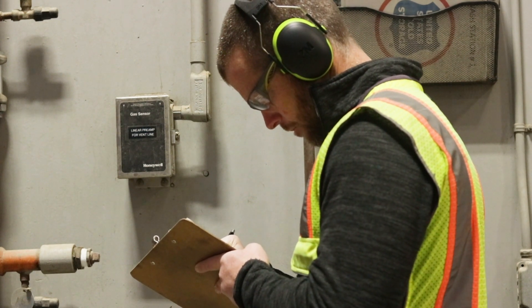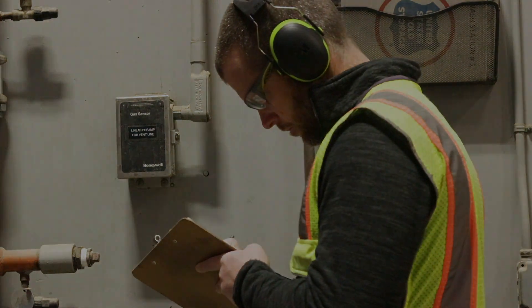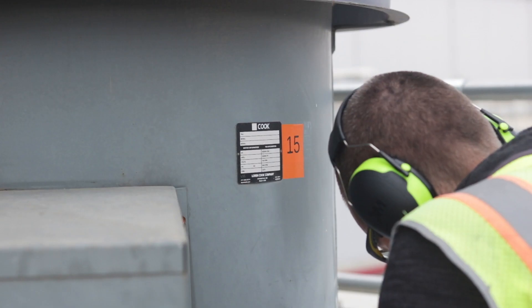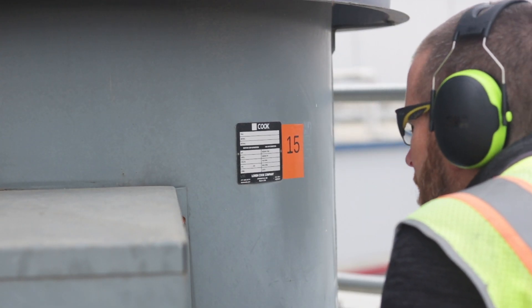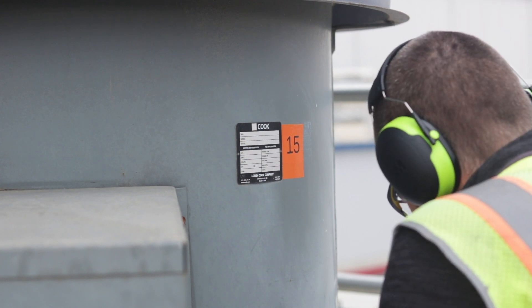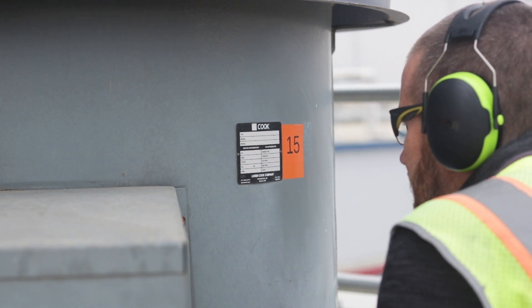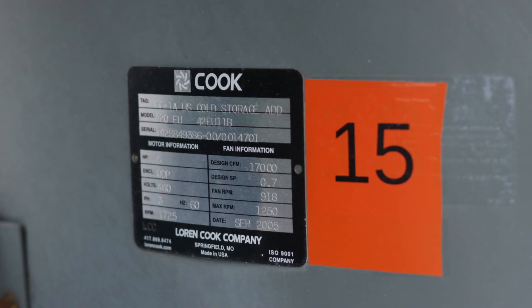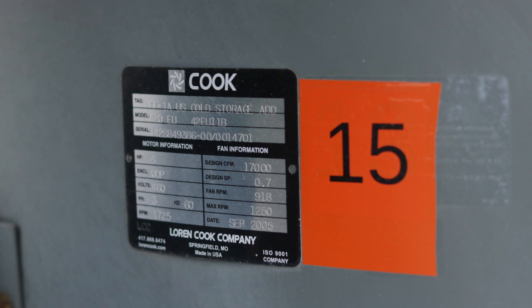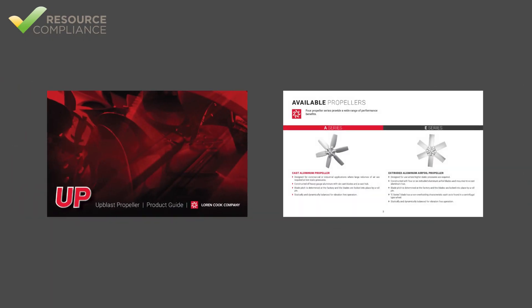Multiple pages can be used if necessary. The last section to complete before beginning the inspection checklist is entitled Machinery Room Ventilation System. The inspector must record the nameplate and airflow data for the fans that make up the Machinery Room Ventilation System. This emergency ventilation fan nameplate contains most of the information required on the form. The manufacturer literature was referenced to determine that the fan blades are aluminum.